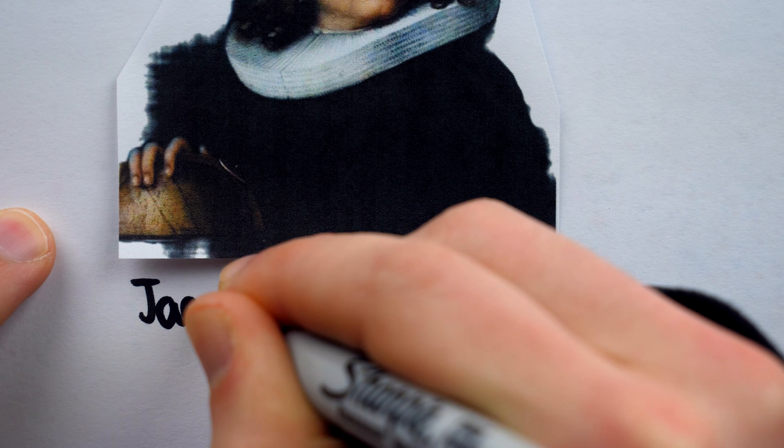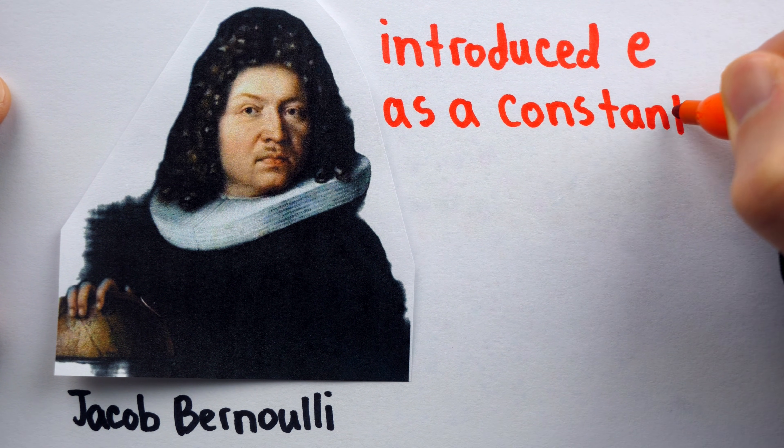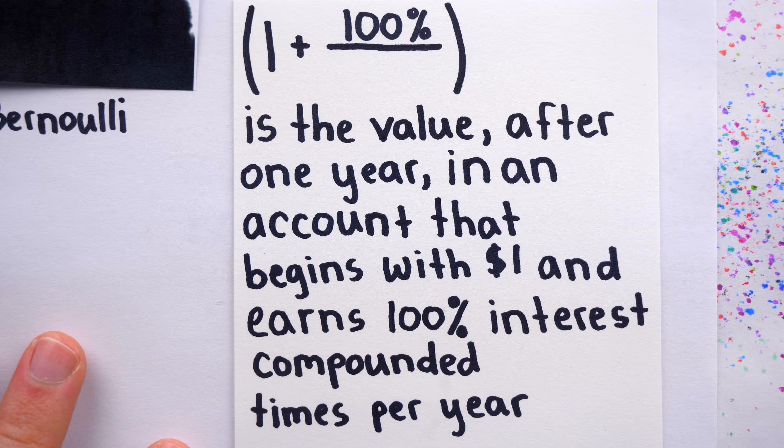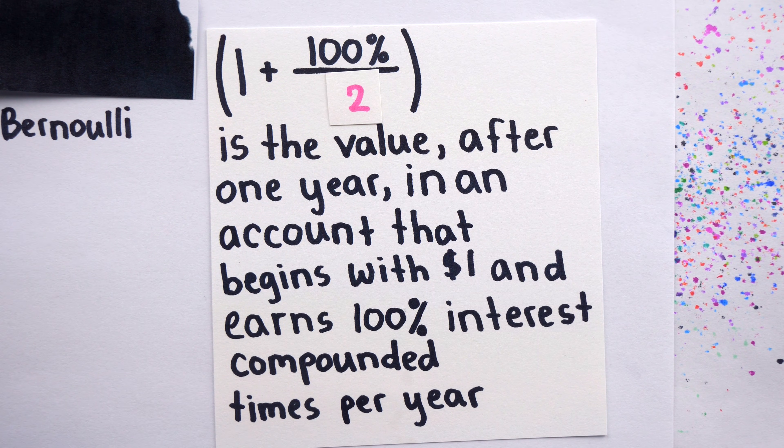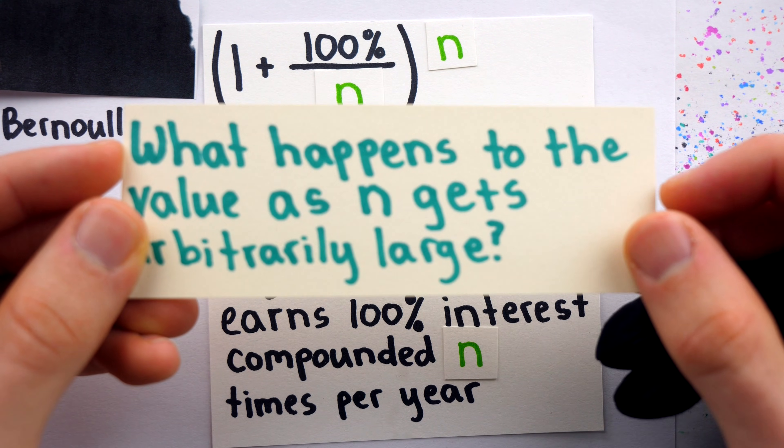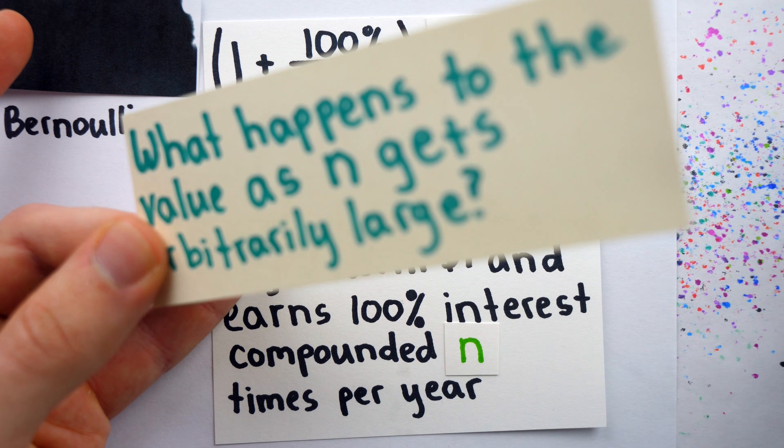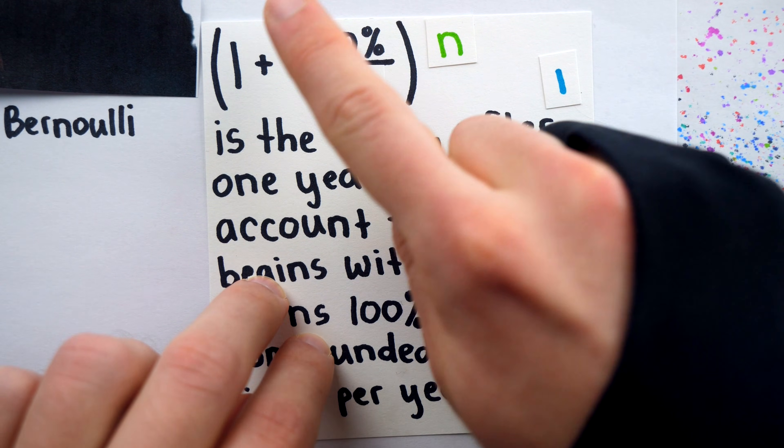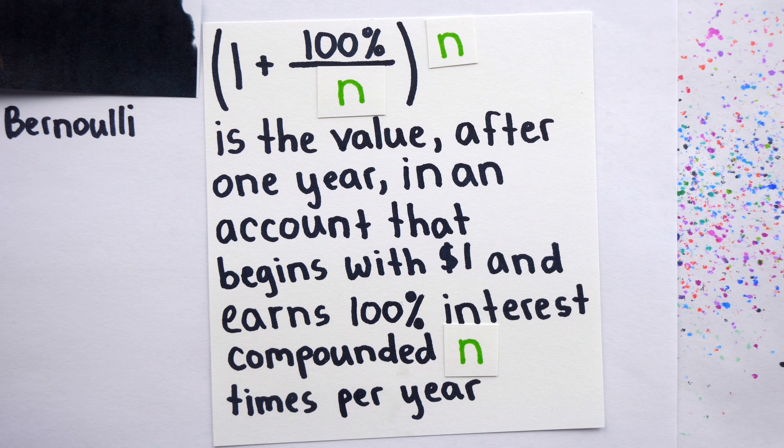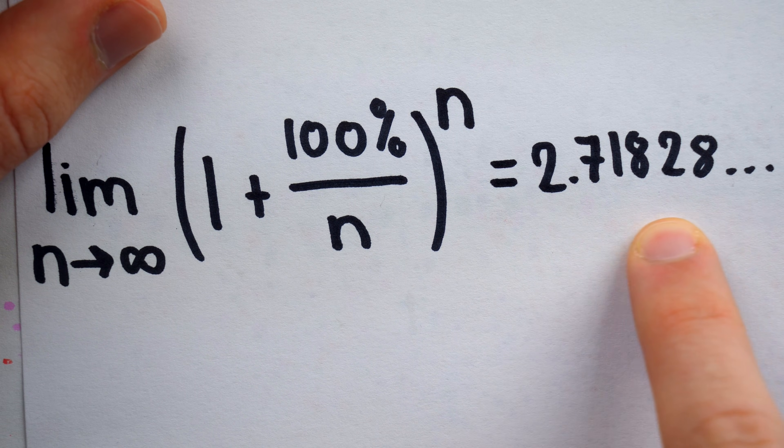E was first introduced as a constant by Jacob Bernoulli in 1683, in the same context that E is typically introduced to students today. I won't go into the details for fear of endless repetition of things you've heard before, but for anyone who doesn't know how E comes about, consider compound interest and this question. If we compound more frequently, going from N equals 1 to N equals 2 to N equals 3 and larger values of N, the value does get larger. But the final total doesn't get arbitrarily large. Rather, it gets arbitrarily close to the number that we now know as E, which is about 2.71828 and so on.